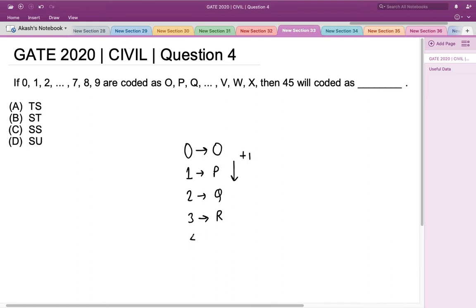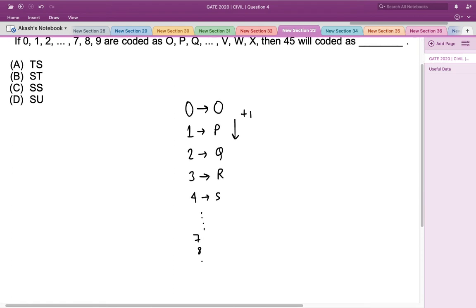And 4 would be mapped to S. Similarly, if I go till the end, then 7, 8 and 9 would be mapped to V, W and X.